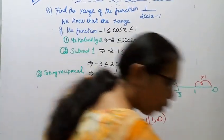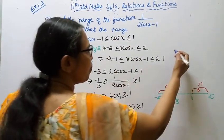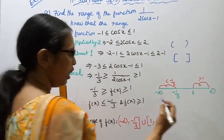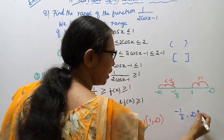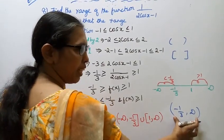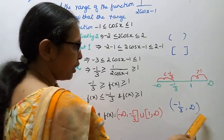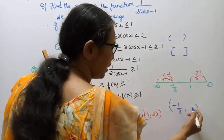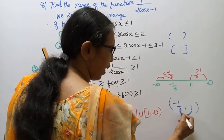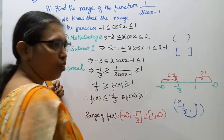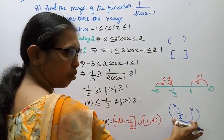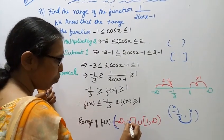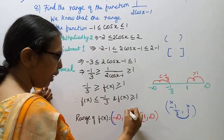This is an open interval at minus infinity, and a closed interval at -1/3. Union with closed interval at 1 and open interval to infinity. The answer is: range of f(x) = (-∞, -1/3] ∪ [1, ∞).